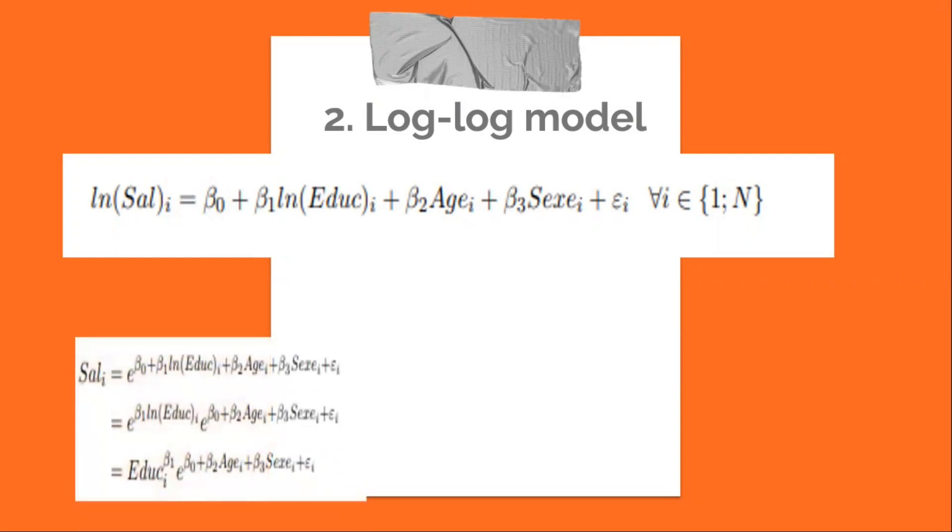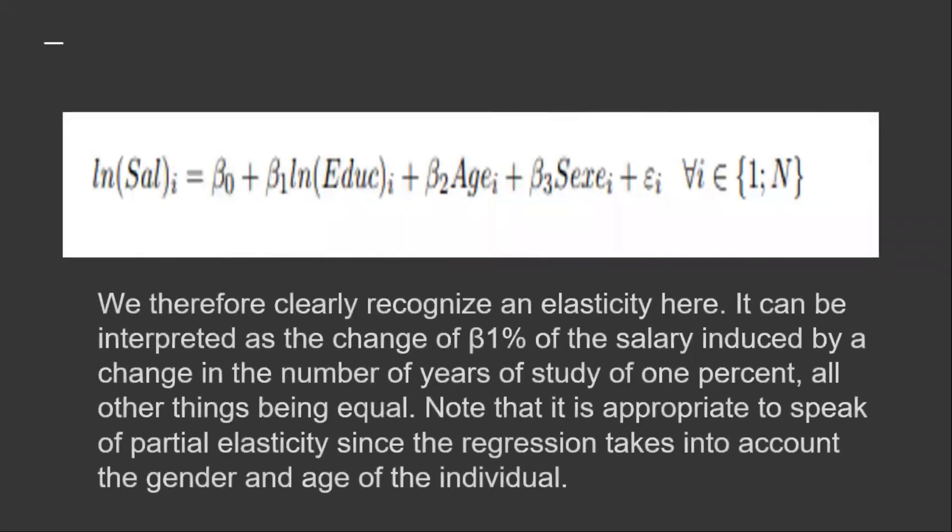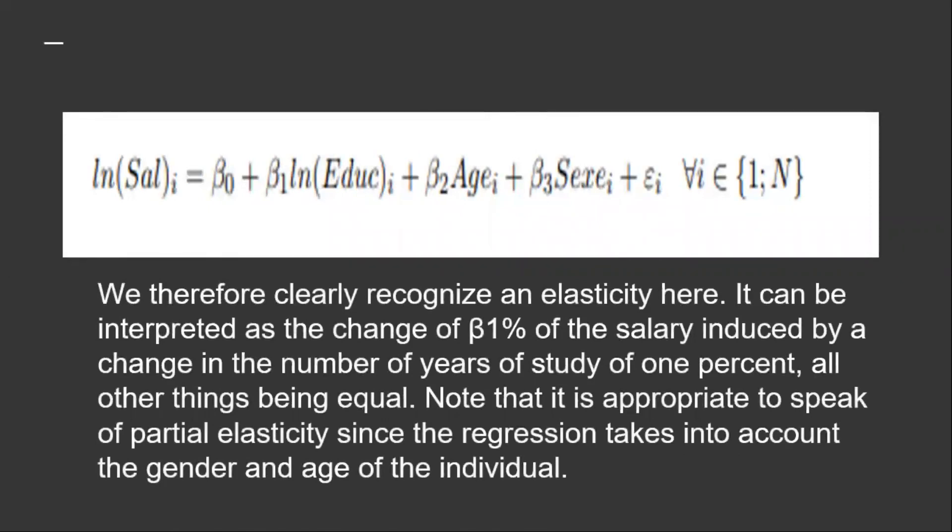We can then derive salary with respect to education, by isolating beta_1, we get... we therefore clearly recognize an elasticity here. It can be interpreted as the change of beta_1 percent of the salary induced by a change in the number of years of study of 1 percent, all other things being equal.